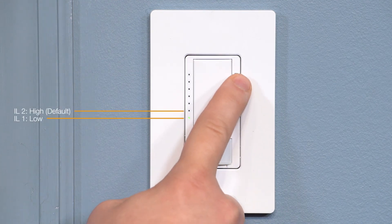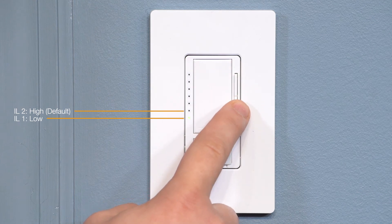Press the raise or lower buttons to move to the desired level. To save your setting, simply press the tap switch.